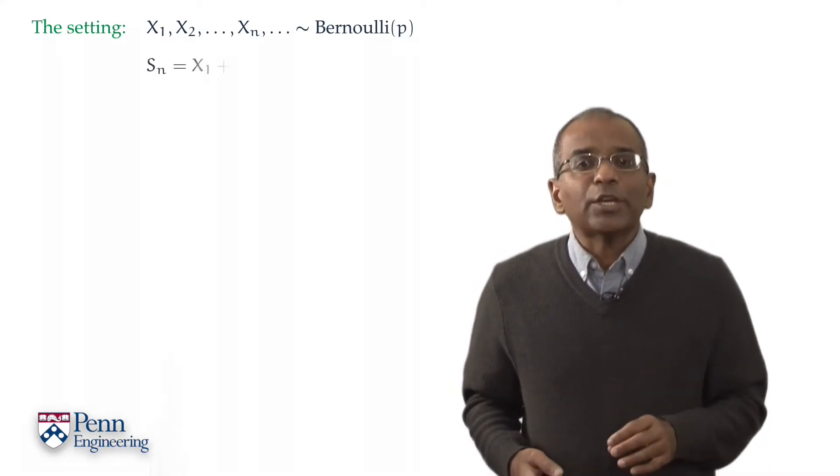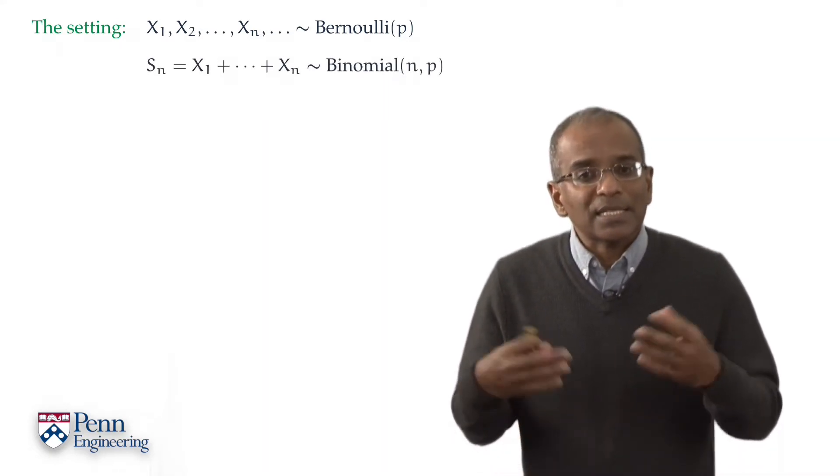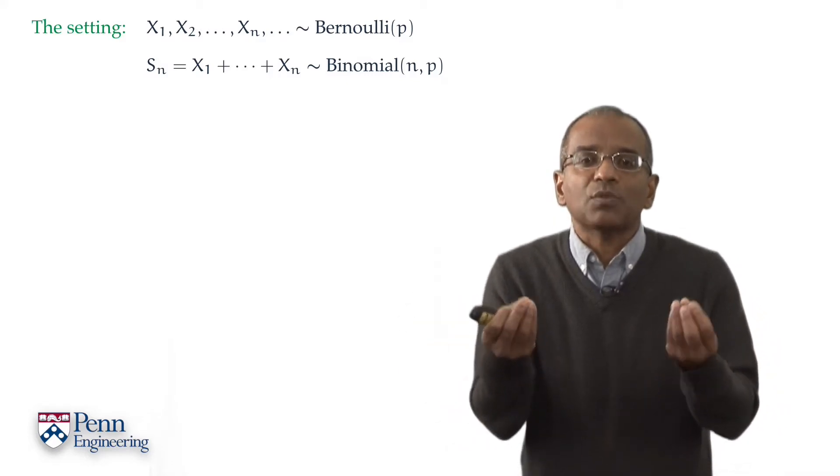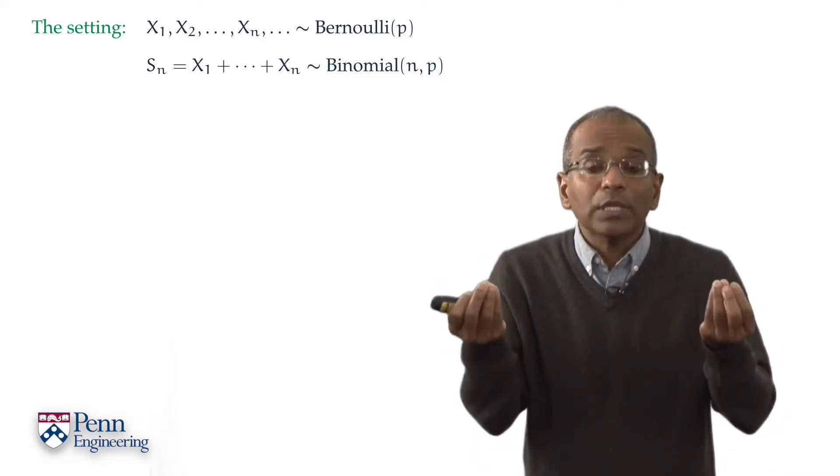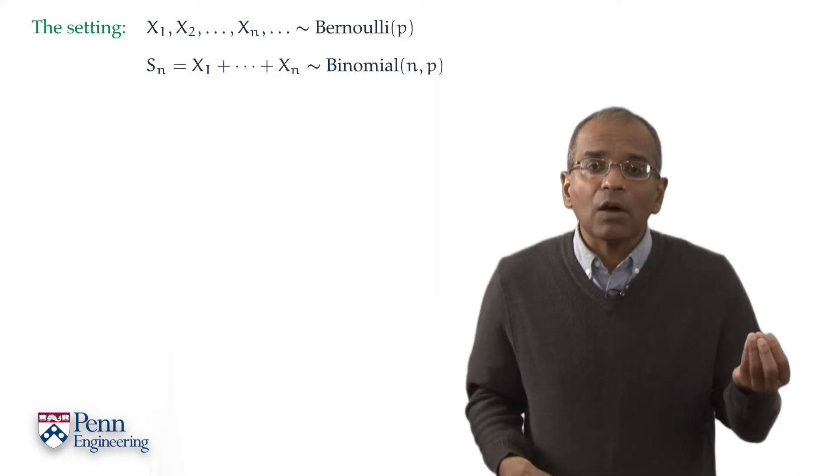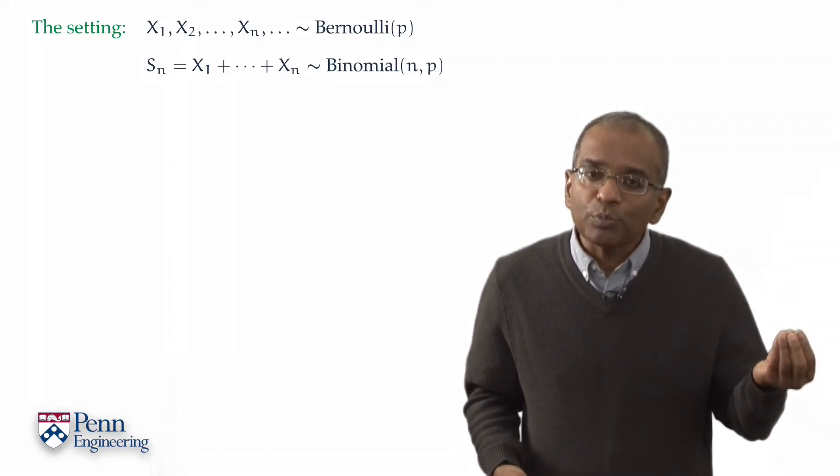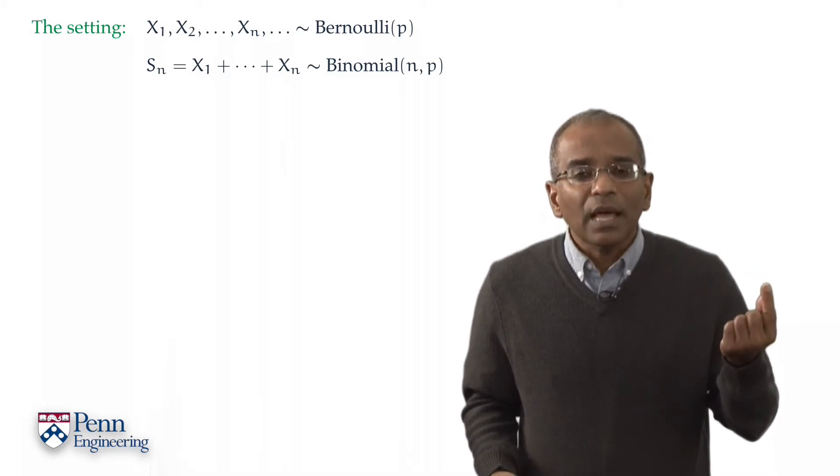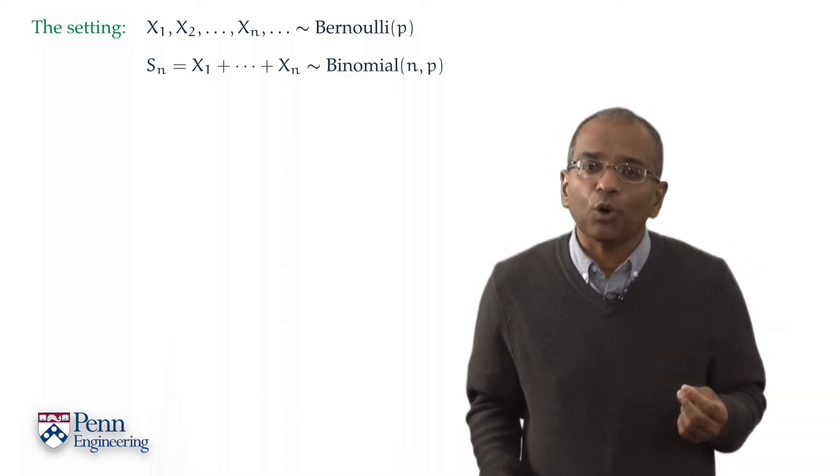We are naturally interested in the accumulated number of successes, S sub n. So for every n, S sub n is the sum of the X's from 1 through n. And we know that for each n, Sn is now governed by a binomial distribution with two parameters, the number of trials n and the success probability of the coin P.